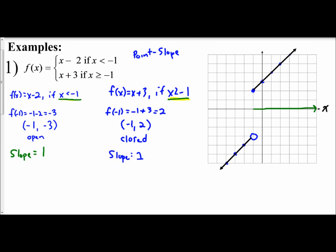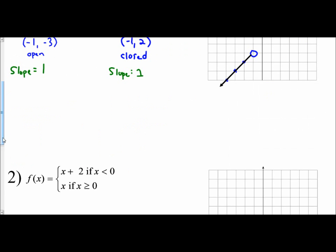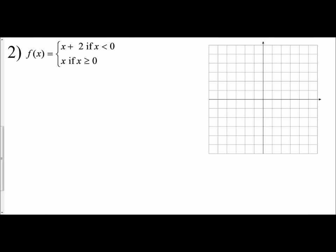This approach I refer to as the point-slope approach because you identify your starting point and then apply your slope carefully following the direction of the condition. Since x is greater than or equal to negative 1, I apply it to the right. Since x is less than negative 1 for the other piece, when I do my slope of 1, I can't go up 1, right 1 — I have to go down 1, left 1 because that's where all the lesser values are.